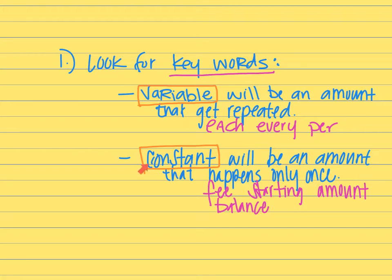There are others, but these are three very commonly used words in story problems to represent your variable. The constant amount is going to only happen one time. Some clue words that happen in story problems are when there's a fee, if there's a starting amount, if a card has a balance on it that you would be using from, that could also be your constant amount that happens only once.